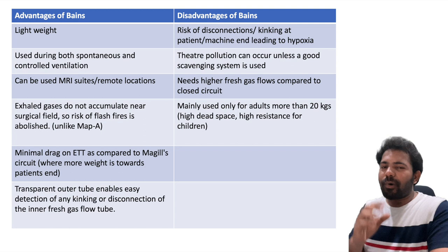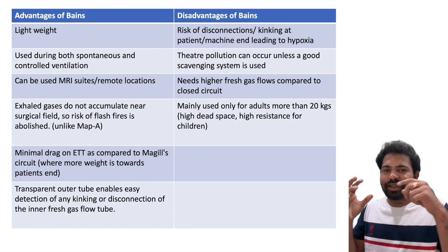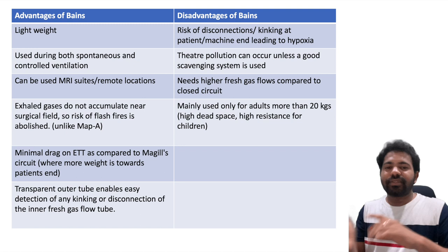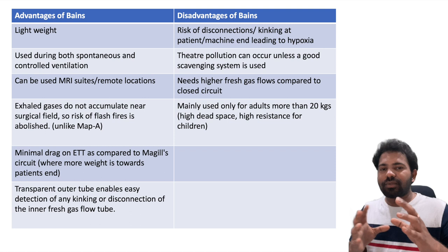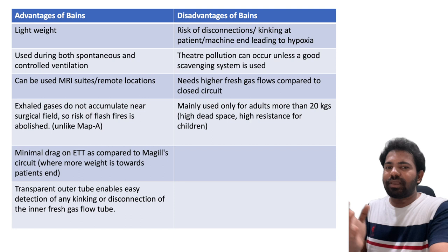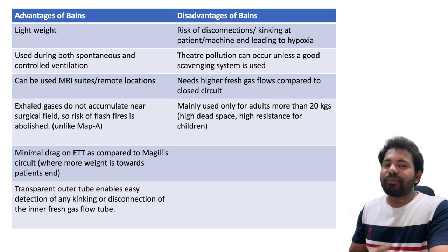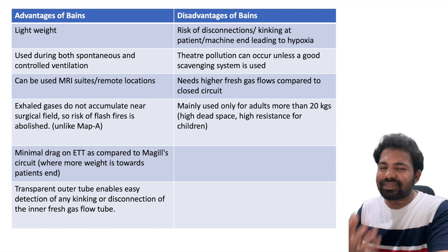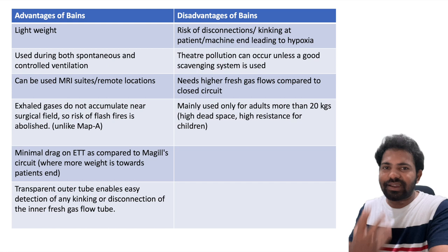Disadvantages include: risk of disconnection at multiple connection points (APL valve to reservoir bag, APL valve to outer tube, outer tube to patient TPS); risk of kinking at the patient's or machine's end, which can inadvertently cause hypoxia; OT pollution due to no proper scavenging system; higher fresh gas flow requirements compared to closed circuits; and it is mainly used only for adults over 20 kg. In children under 6 years or under 20 kg, the Jackson-Rees circuit (modified Ayre's T-piece) is the circuit of choice due to dead space and resistance concerns.